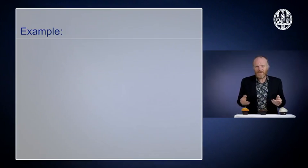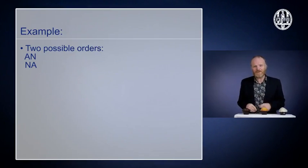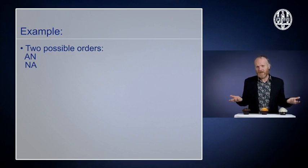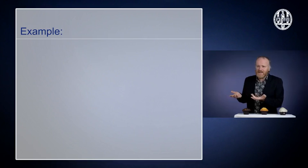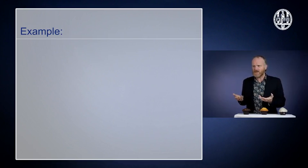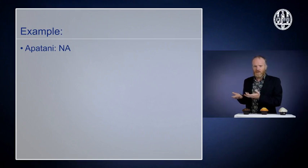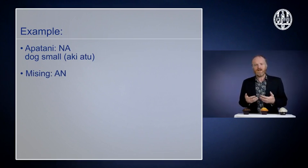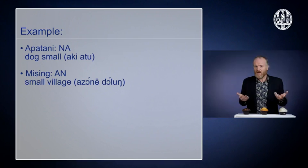Those two — nice and man — we can again put in two different orders. So 'nice man' is adjective-noun, or we can have noun-adjective: 'man, nice'. We find both orders in languages of the world. Here are two examples from the same language family — both Tibetan-Burman languages. Apatani puts the adjective after the noun, so you say something like 'dog small'. Mising, on the other hand, puts the adjective in front of the noun, so you say 'small village', just like you would in English.